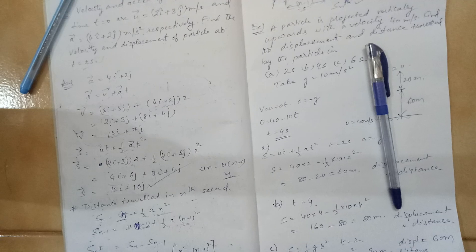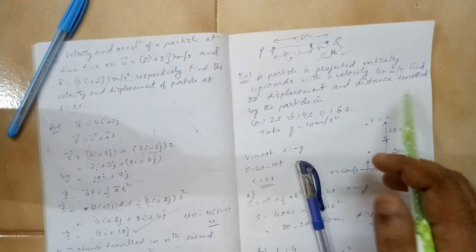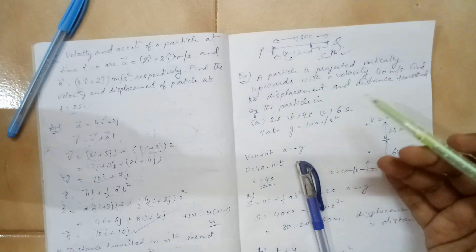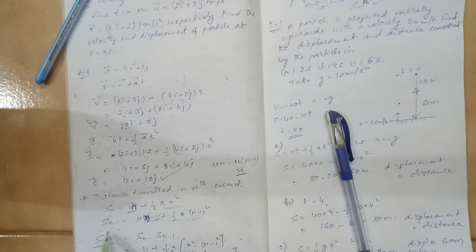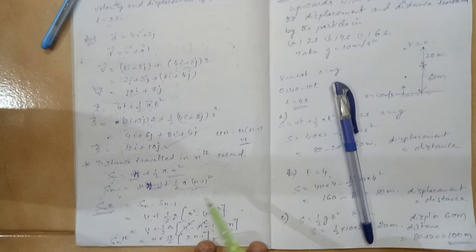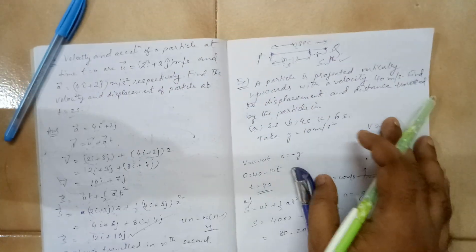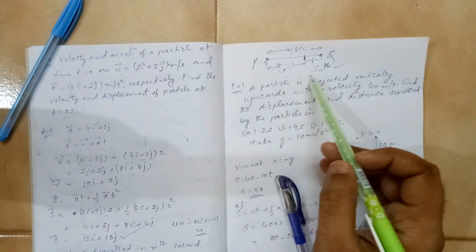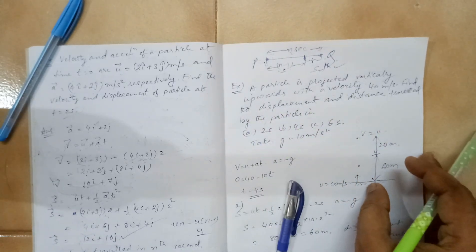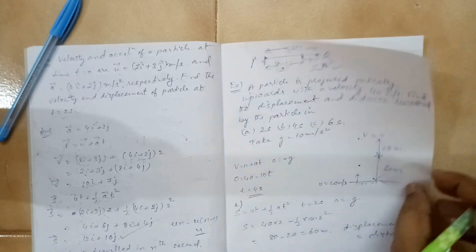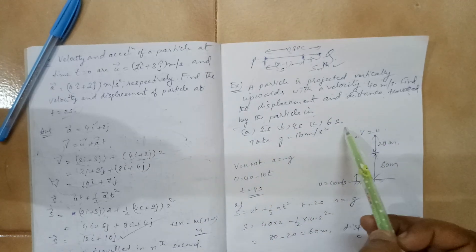Remember the procedure because they may ask about the last 2 seconds — then you put Sₙ₋₂ and derive a different formula. But usually Snth is what is asked. Let us see one more example: a particle is projected vertically upwards with a velocity of 40 meters per second.